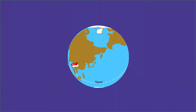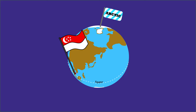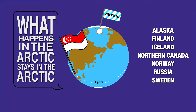Singapore is a small island state located in the equatorial region. The Arctic is a polar region located at the northernmost part of the Earth, which lies above 66 degrees north. Singaporeans might think that what happens in the Arctic stays in the Arctic since it is located so far away from us. However, that is not the case. We will see why and how changes in the Arctic influence other parts of the world.